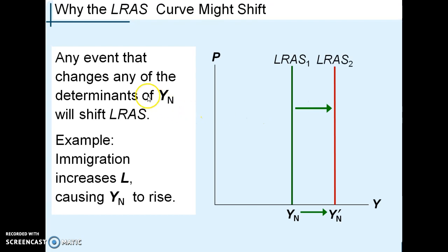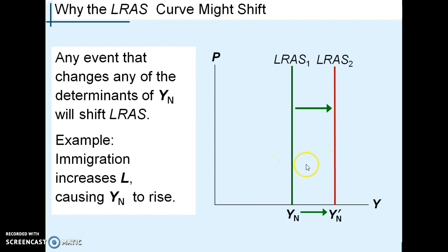Anything that increases your overall production — like more workers (for example, immigration), more machinery, more technology, better human capital, or anything that raises productivity — shifts the long-run aggregate supply curve to the right.